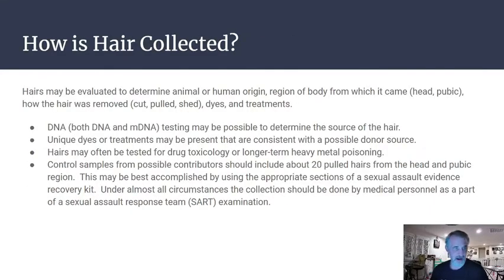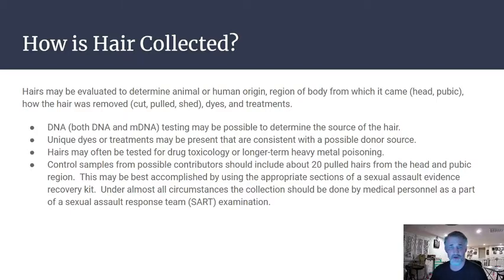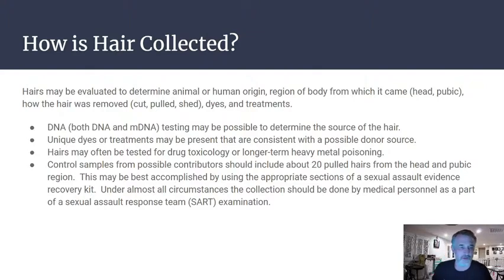For hair evidence, examination can determine whether it's animal or human, what region of the body it came from, how it was removed — cut, pulled, or shed — and if there are dyes or treatments. If a follicular tag is present, both nuclear DNA and mitochondrial DNA testing may be possible. Unique dyes and treatments can also help identify the donor source. Hair can be tested for drug toxicology and long-term heavy metal poisoning. Control samples should be collected — typically 50 to 100 hairs, though this varies by jurisdiction.